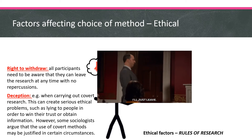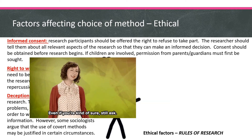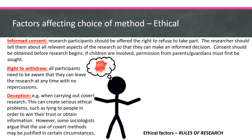The right to withdraw is giving people the ability to leave the research with no repercussions. Related to this is informed consent: all participants should be offered the right to refuse to take part, and the researcher should tell them about the research so they can make an informed decision. With children, if they're not old enough to give consent, you might need to get consent from parents or guardians. These three — deception, right to withdraw, and informed consent — tend to overlap: if you are deceiving people, they probably have not provided informed consent and don't have the right to withdraw.